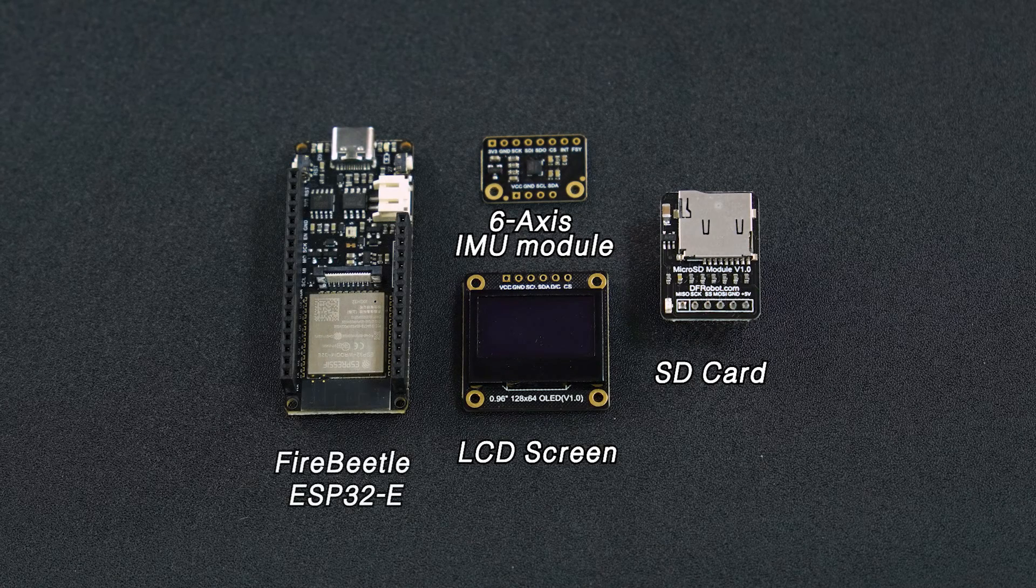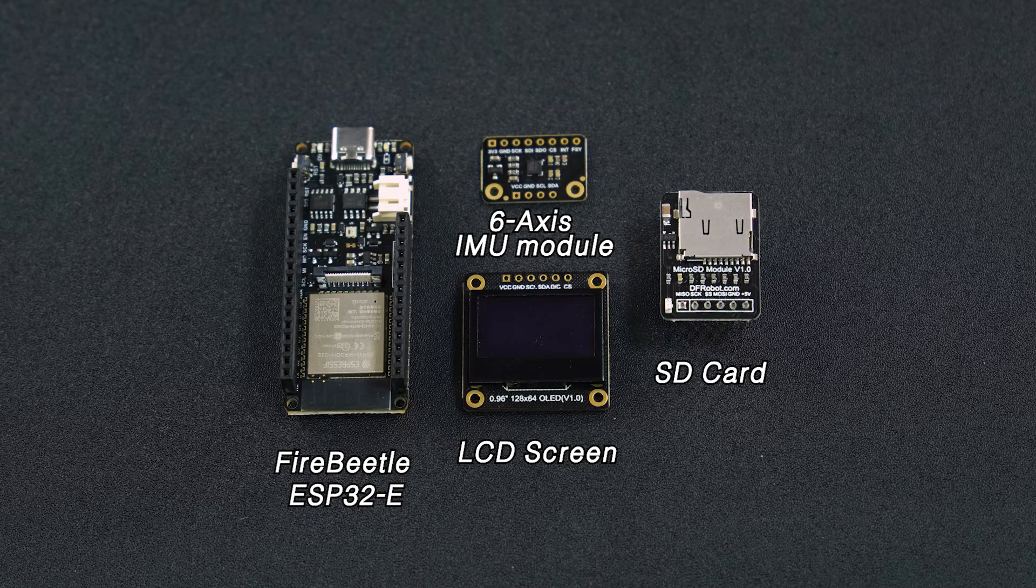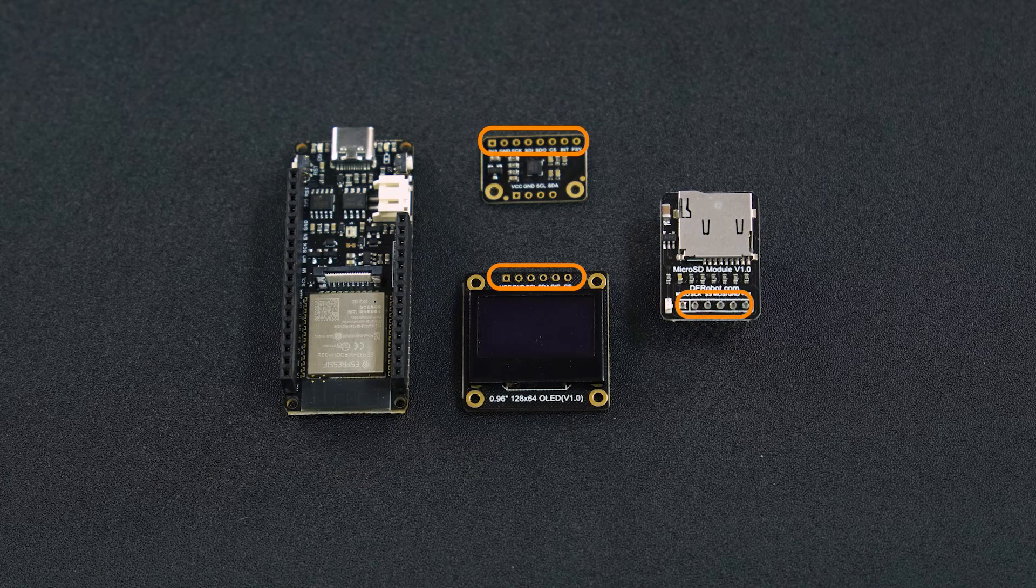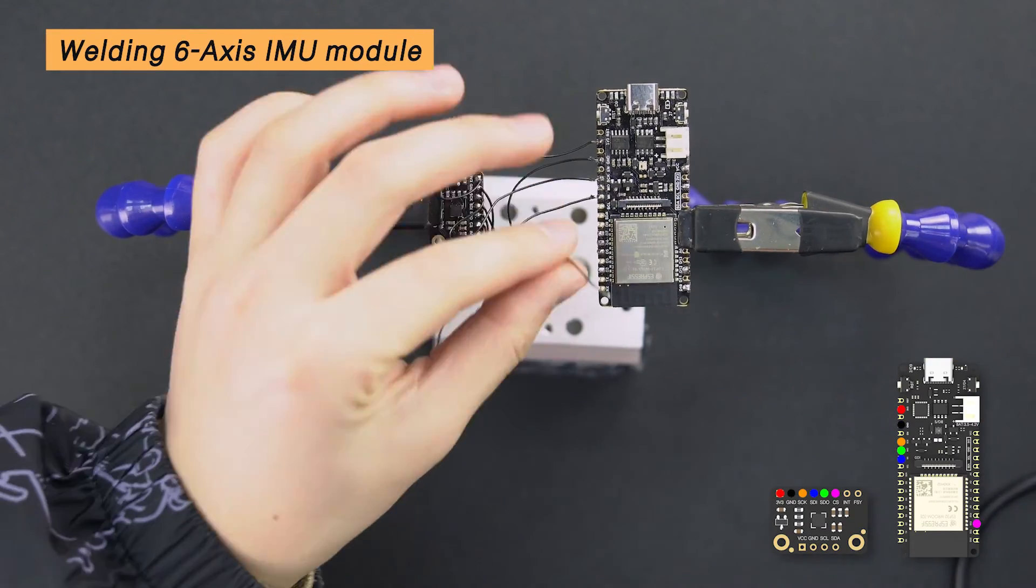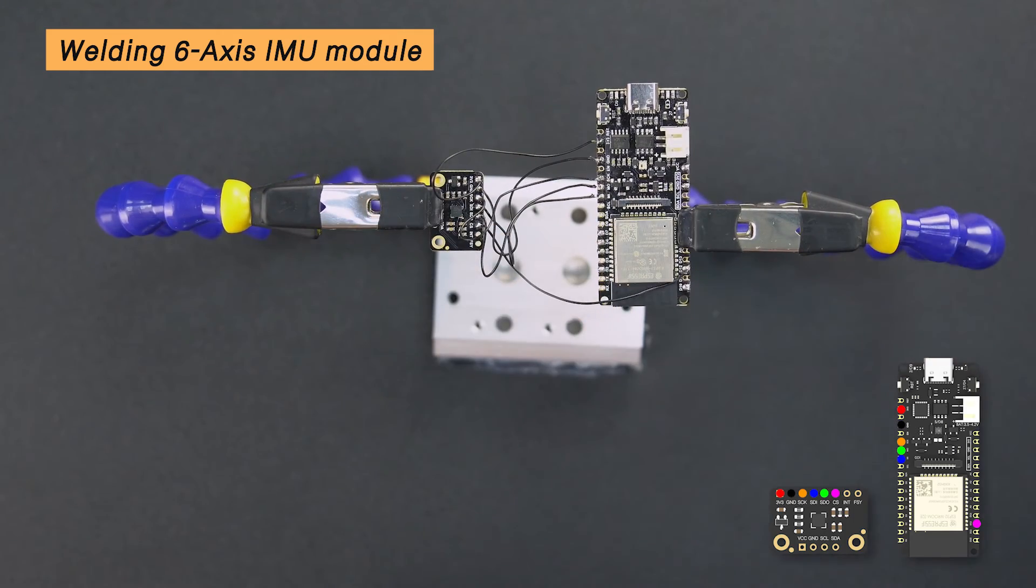We'll choose the DFRobot Fire Beetle ESP32E as the main controller in this project. Since a high data refresh rate is required here, all devices will be connected by SPI interfaces to ensure everything goes well. Now, connect them to the Fire Beetle ESP32E according to the SPI connection rule.